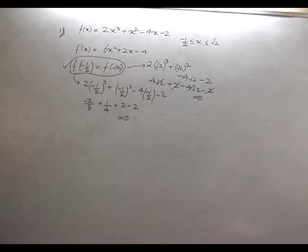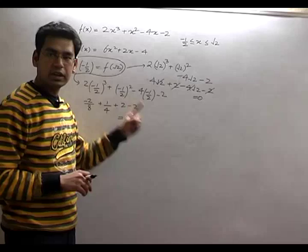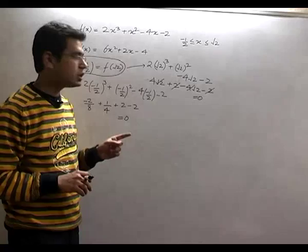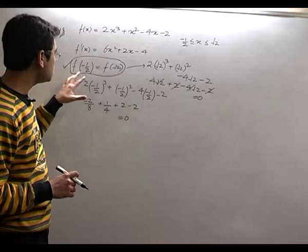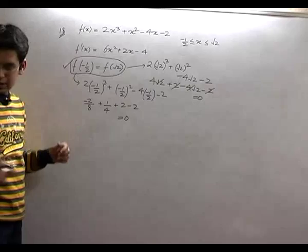All right, so this means that Rolle's theorem is applicable over this question because my three conditions are valid. One that it is continuous, another being that it is differentiable, and third one is that end points pe function ki value equal hai, that is f(-1/2) is equal to f(√2).